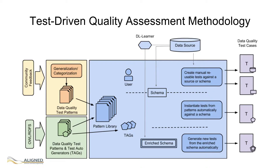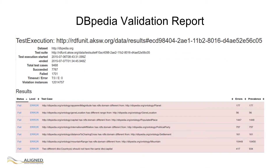Once the validation is complete, an extensive report is generated containing statistics and provenance information of all violations detected in the dataset. This offers comprehensive quality insight into the data. For further details on RDFUnit, please watch the video of deliverable 4.4, automated data testing and verification framework.